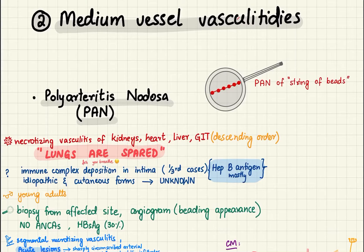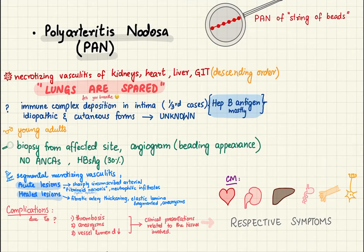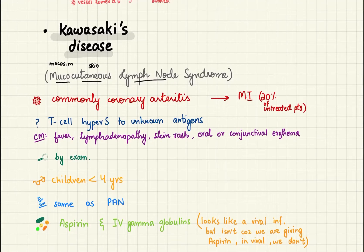Next we have medium vessel vasculitides. The first is polyarteritis nodosa (PAN). Remember the classic 'string of beads' appearance on angiogram and its association with hepatitis B surface antigen. The lungs are spared. It has two types of lesions — acute and healed — and affects organs including the heart, kidney, liver, GIT, skin, and nervous system.